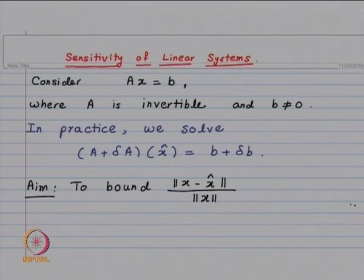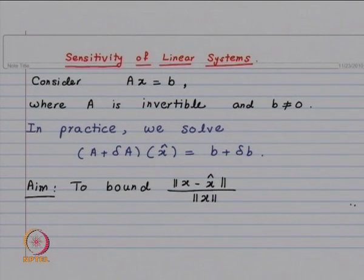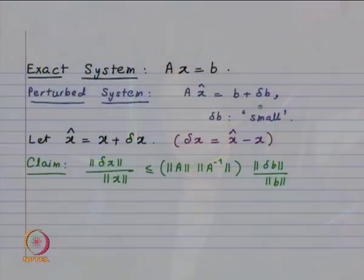In order to simplify our analysis, first we will assume that there is only error in the right-hand side. Next, we will consider the case when there is also error in the coefficient matrix δA. This is for simplification. Finally, we are going to look at the general equation — A + δA as the coefficient matrix and right-hand side b + δb. To start with, the exact equation is Ax = b and we look at only perturbation in the right-hand side, so we have error δb.